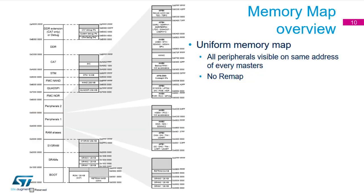The MP1 memory map follows the standard ARM layout, addressed up to 0xFFFFFFFF. Peripherals are distributed throughout the address space, SRAM sits around 0x20000000, and the boot ROM is at address zero. ARM defines where certain memory types must sit in the address range, so the addressing is uniform with no remapping, though there is a split indicating which core can access what in the lower address region.